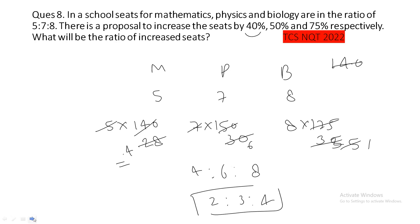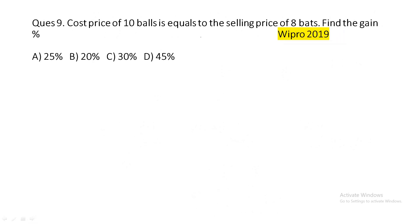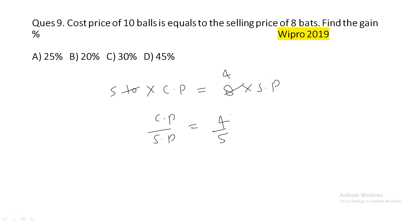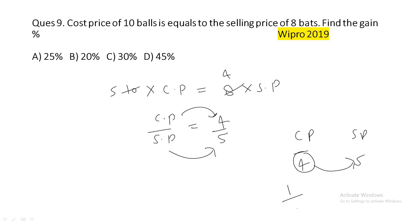Next question: the cost price of 10 balls equals the selling price of 8 balls. Find the gain or loss percent. We find CP:SP. Simplifying 10 balls CP = 8 balls SP gives CP:SP = 4:5. CP is 4 and SP is 5, so there is an increase of 1. Gain percent = 1 upon 4 into 100 = 25 percent. The answer is a gain of 25 percent.